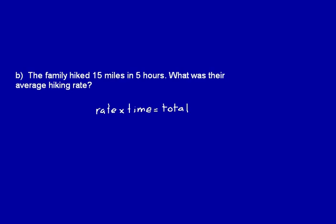Now let's just think about what we know in this problem. We know the total, the family hiked 15 miles. So we know the total distance. And we know that they took five hours to do that. We know the time. We don't know the rate. So we'll just say rate or R times 5 equals 15.